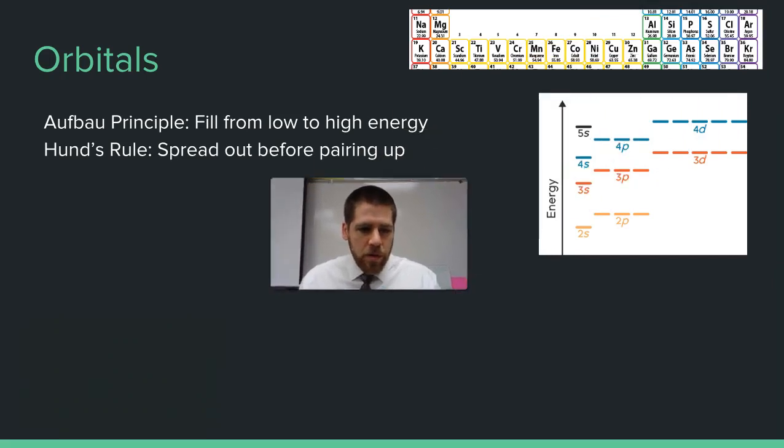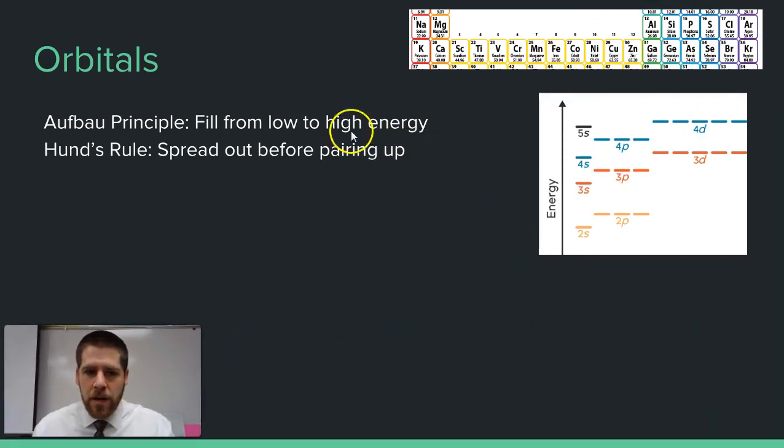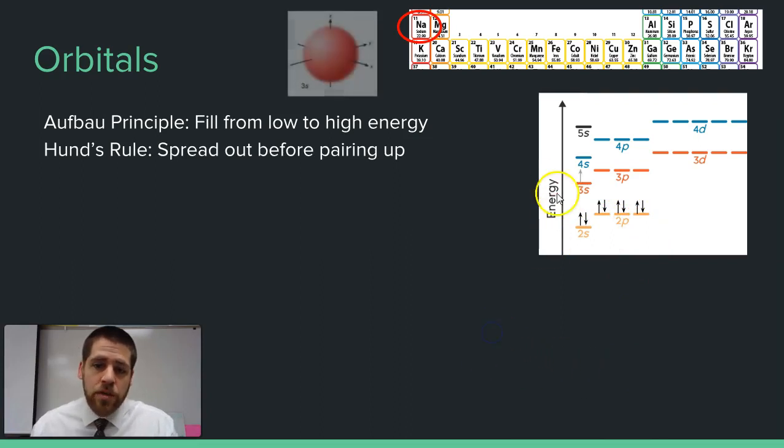Now, a little bit about the orbitals. We've seen this before, so I won't spend too much time on this. For sodium, the two Ps are not shown here, so let's fill those in: 1s2, 2s2, 2p6. Sodium would then be 3s1, right? So we have one arrow in the 3s.